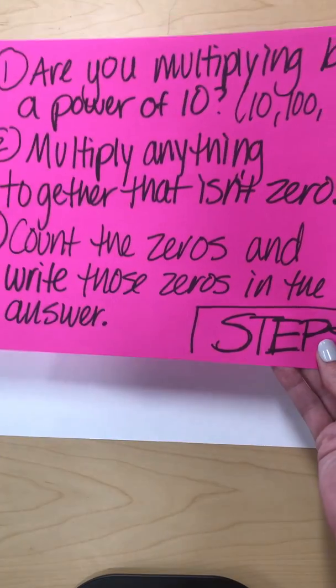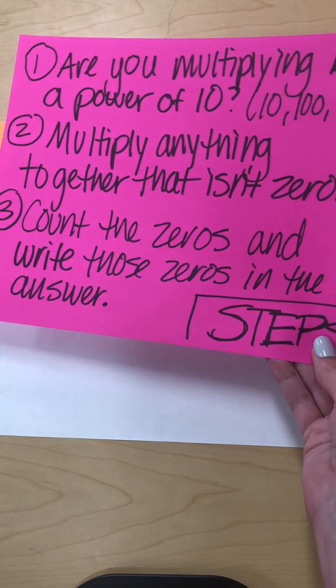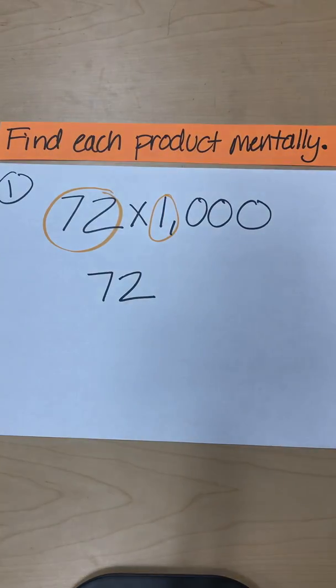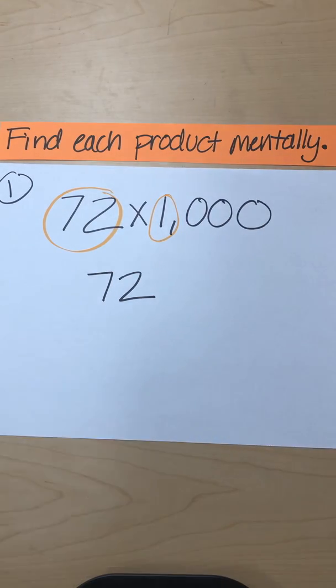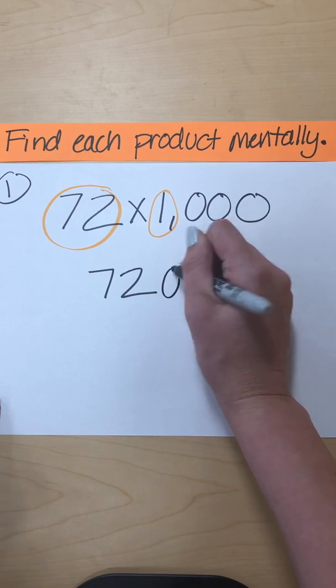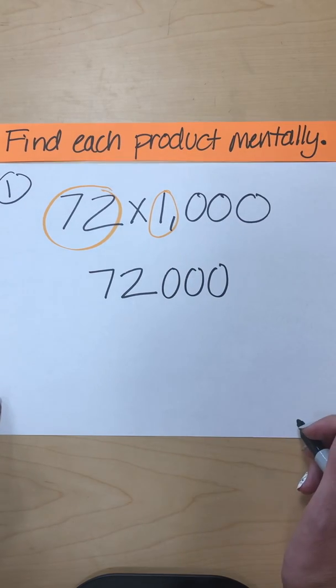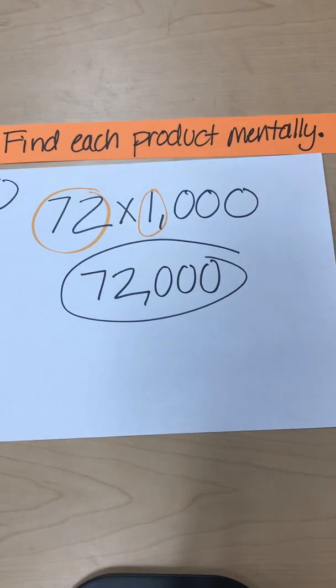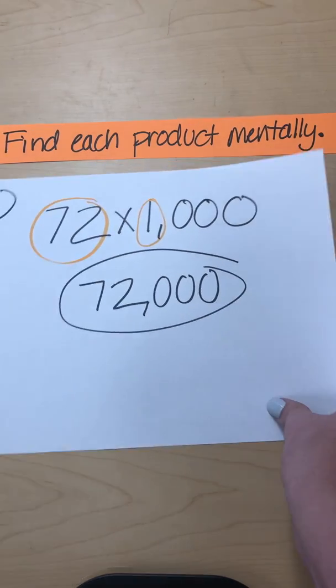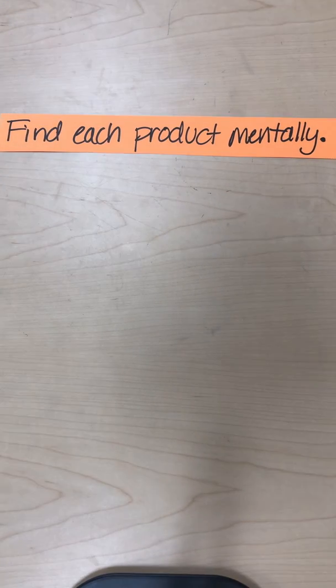We need to do step three, which is count the zeros and write the zeros in the answer. How many zeros do we see here? One, two, three. We'll write one, two, three zeros in our answer. Don't forget the comma. And that's the answer to number one. So were we able to find this mentally? You easily can if you use this pattern. This pattern will help you a lot.